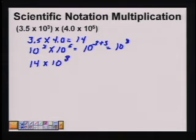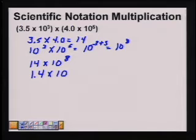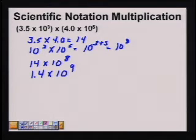Now we need to switch this to be in scientific notation form. That means moving the decimal point one place to the left, which then will increase the exponent on the 10 to a 9. The answer here is 1.4 times 10 to the ninth.